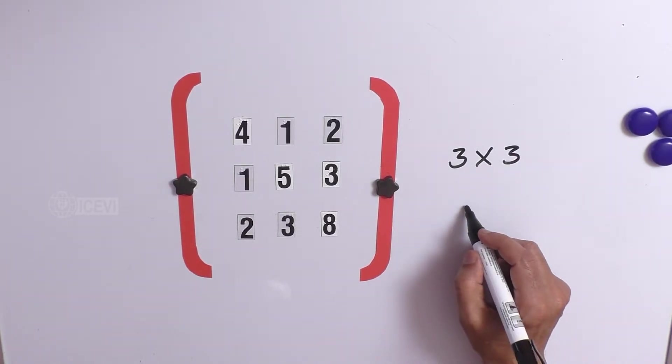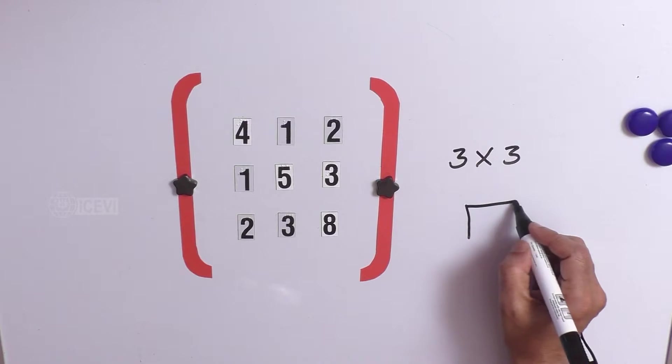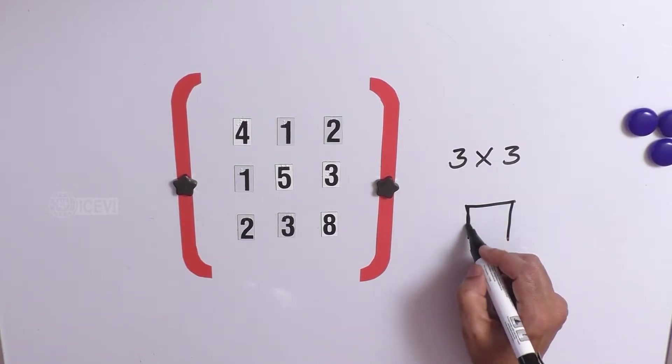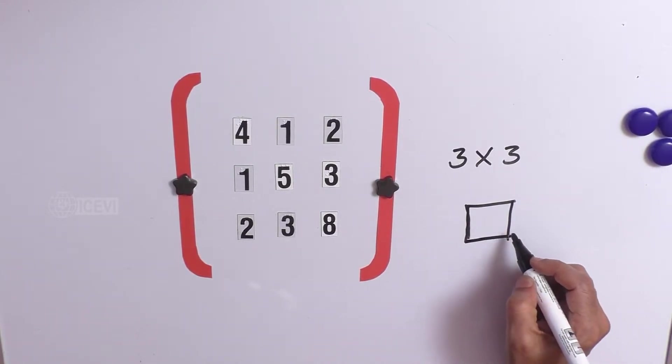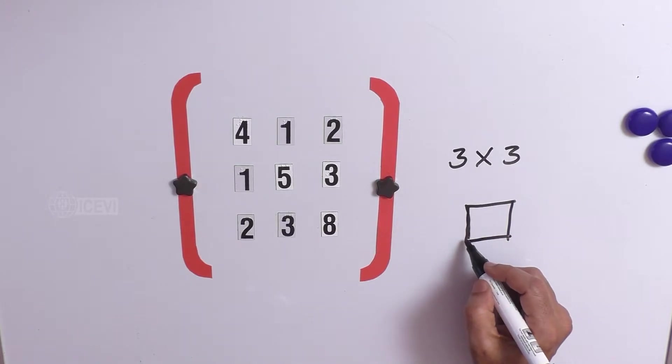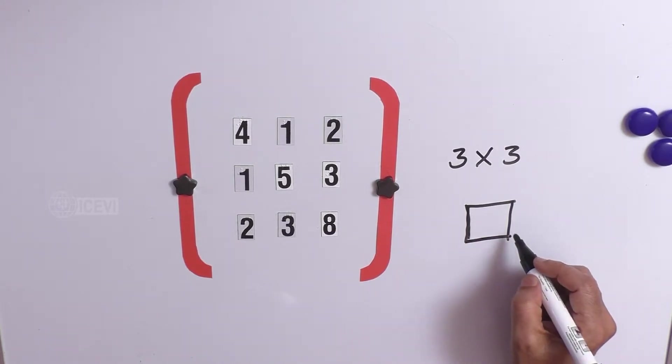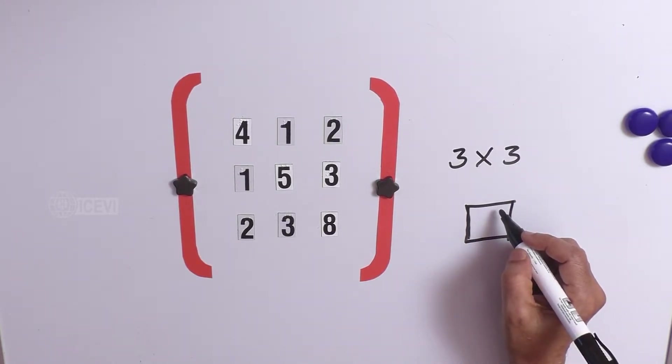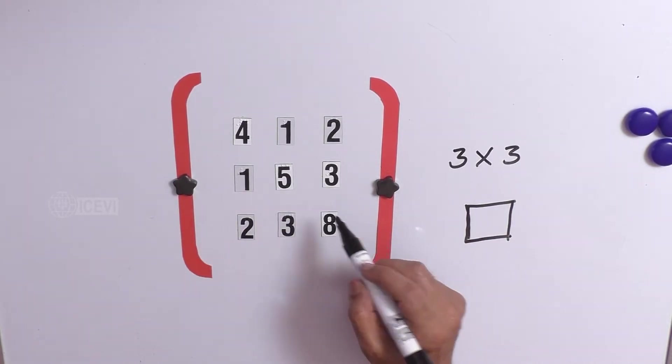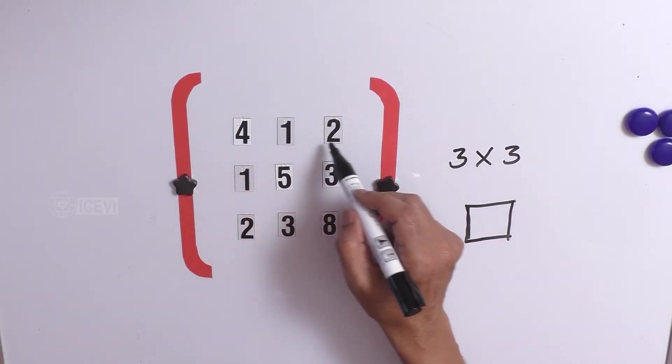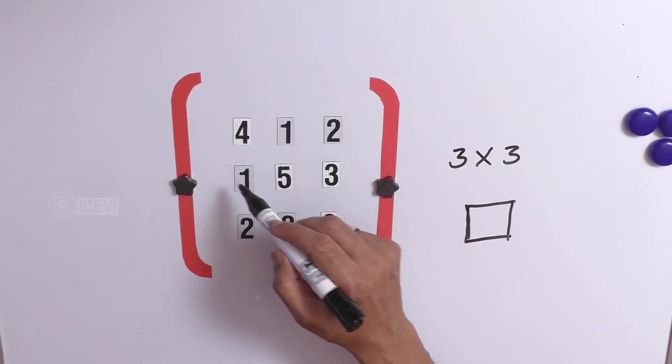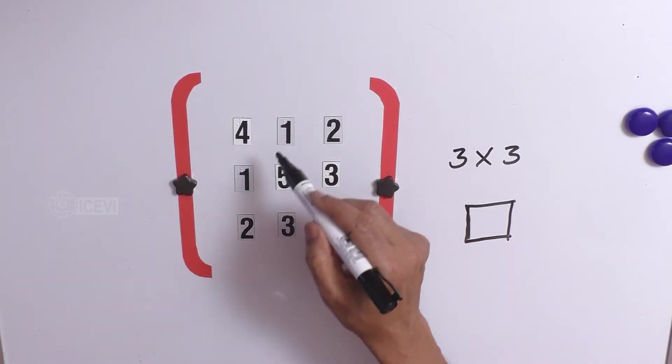Now, what is the meaning of a square? The meaning of the square is, when the length is equal to the breadth, we call that as a square. Here we notice that there are 3 rows, 3 rows and 3 columns.